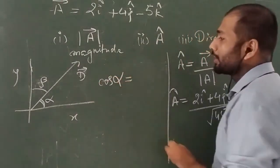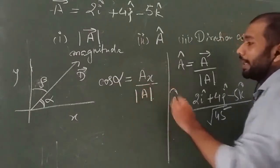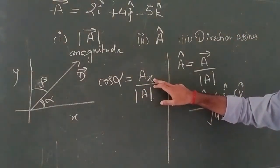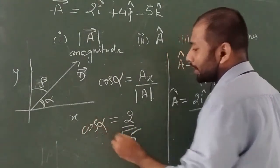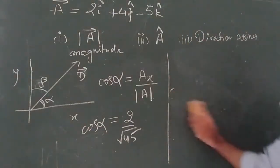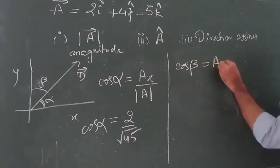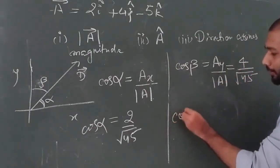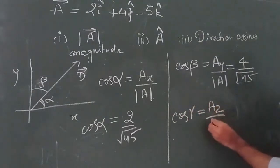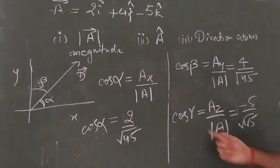For a 3D vector we have three direction cosines. cos α is the component of vector A on the x-axis divided by the magnitude of A. The x-component is 2, so cos α = 2/√45. Similarly, cos β = Ay / |A| = 4/√45. And cos γ = Az / |A| = -5/√45. These three terms are our direction cosines.